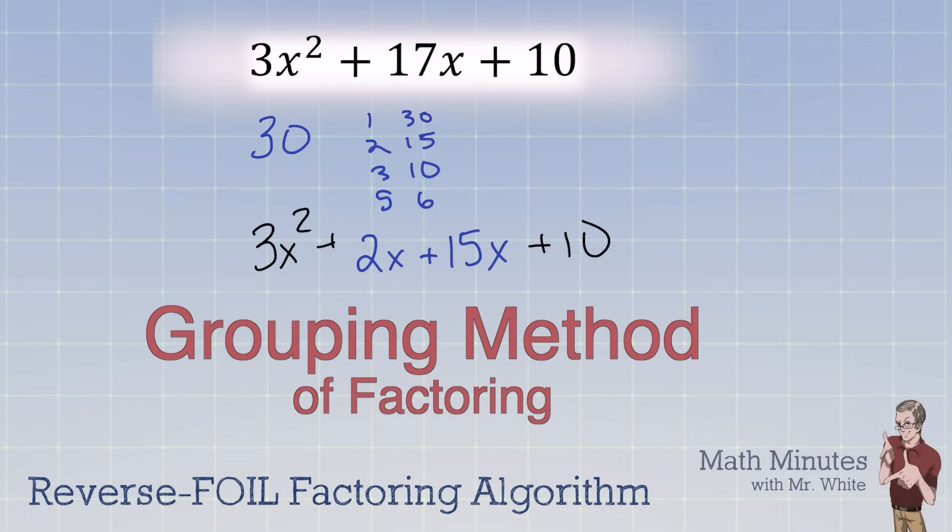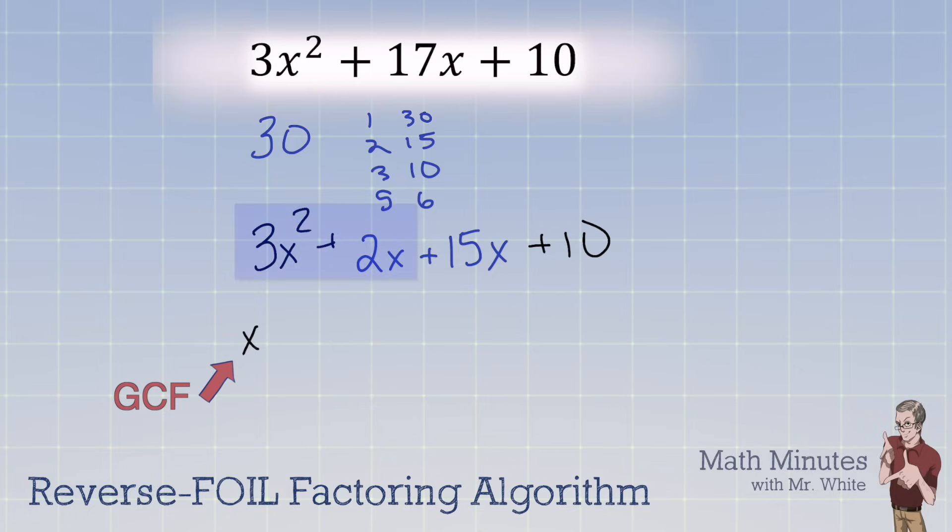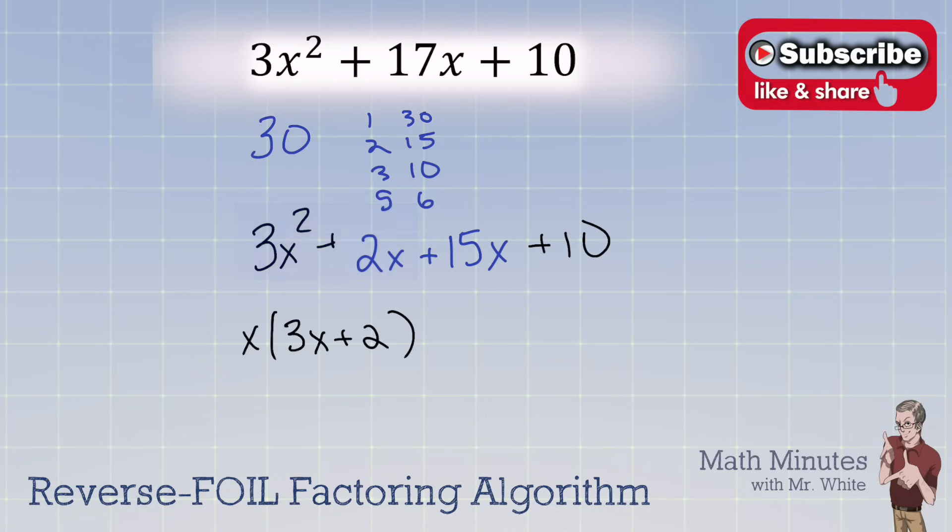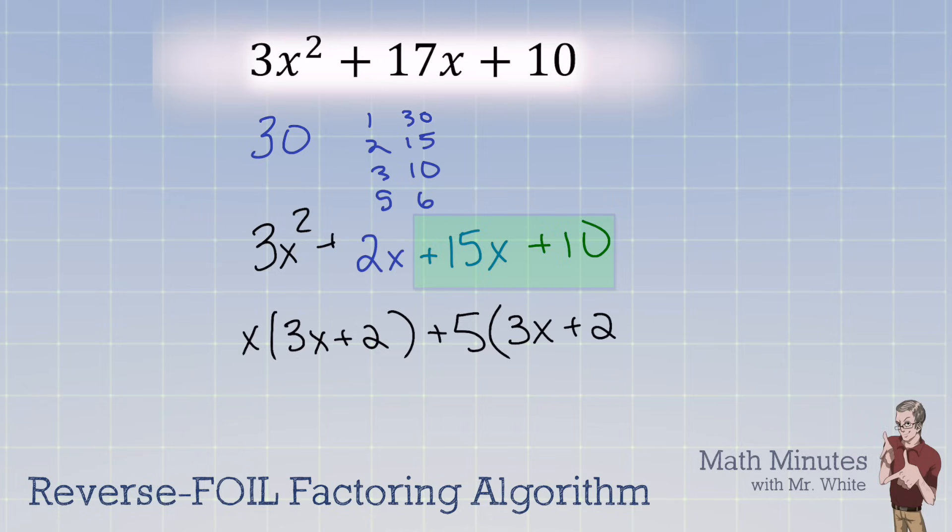We look at those first 2 and we take out the GCF. The GCF on the first 2 is x. That leaves behind 3x plus 2 inside a parenthesis. Now turn your attention to the last two terms and the GCF there is 5. And that leaves behind 3x plus 2. Well, look at that. They have the same binomial. It's called a common binomial.